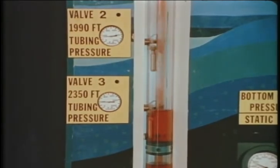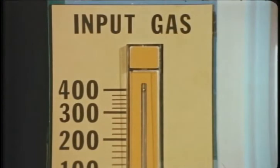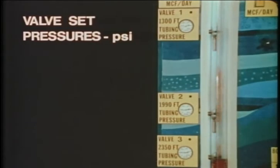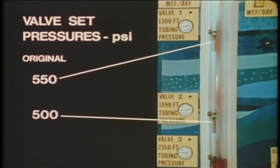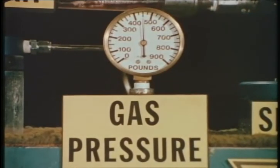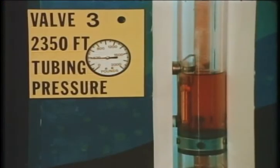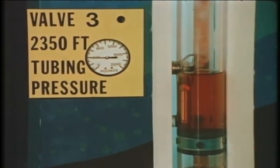As we examine the well model, we see that it is producing 800 barrels per day at 400 MCF per day from the bottom valve. Valve set pressures are: number one, 550 PSI; number two, 500 PSI; and number three, 450 PSI. We note that the casing pressure is controlled at 450 PSI because 450 PSI is the set pressure of the bottom valve through which the well is producing.